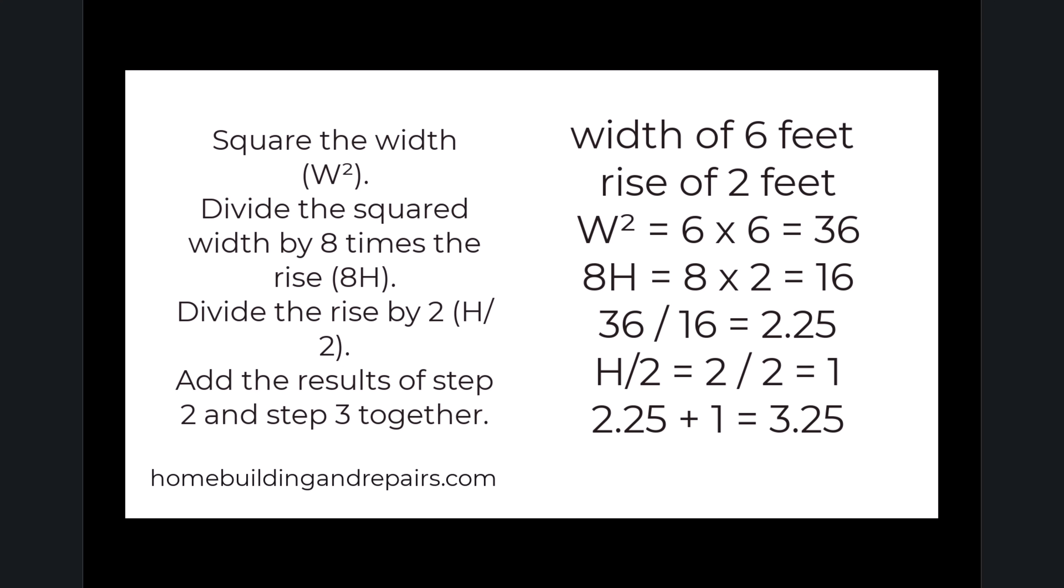Then we're going to take the height and divide it by two. So that's two divided by two. That equals one. Then we're going to add both of those numbers together for 3.25. And 3.25 is going to be our radius in this example. That would be 3.25 feet.